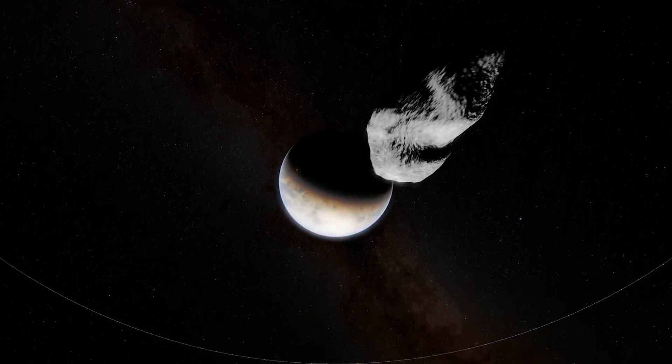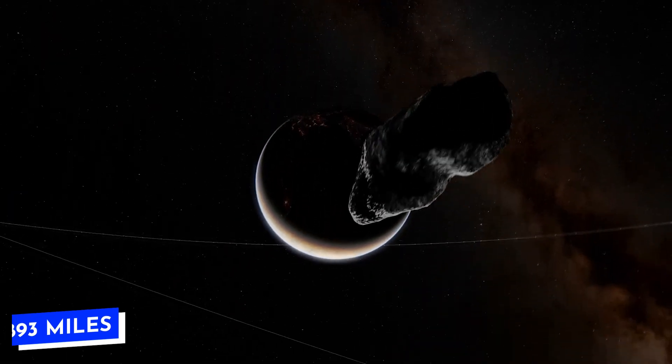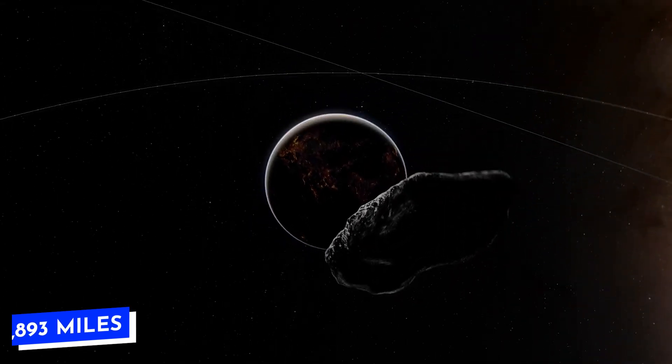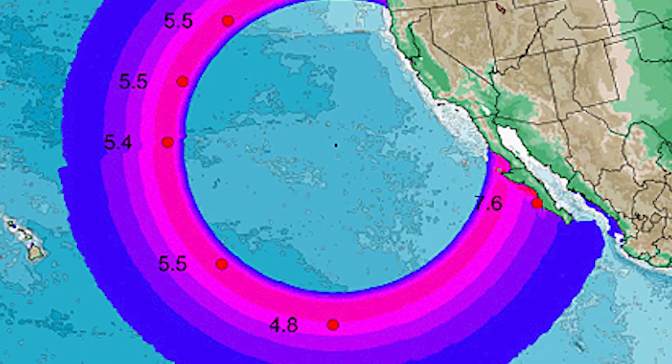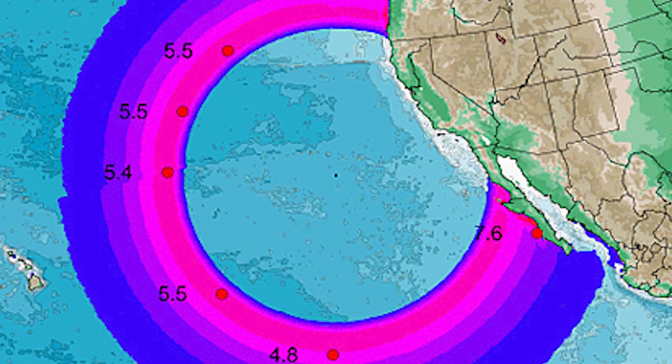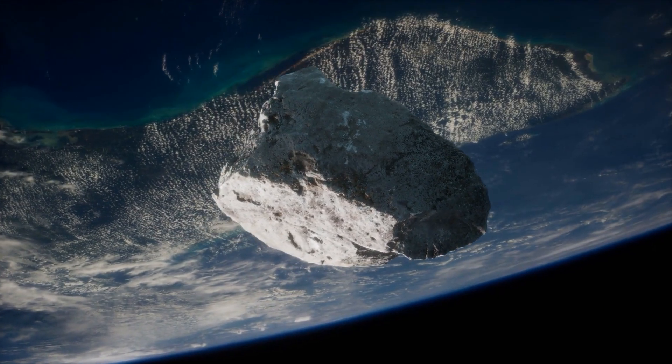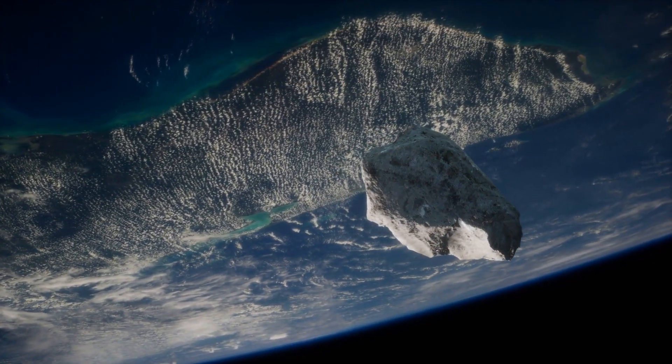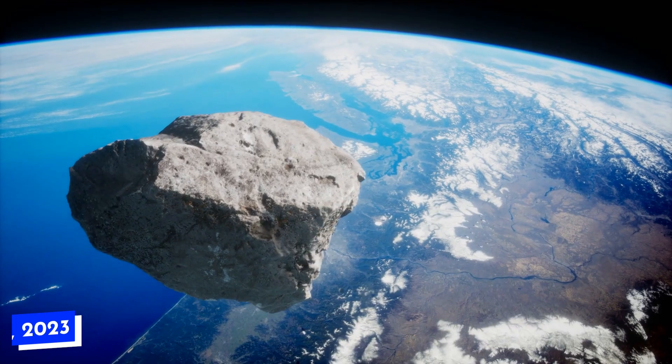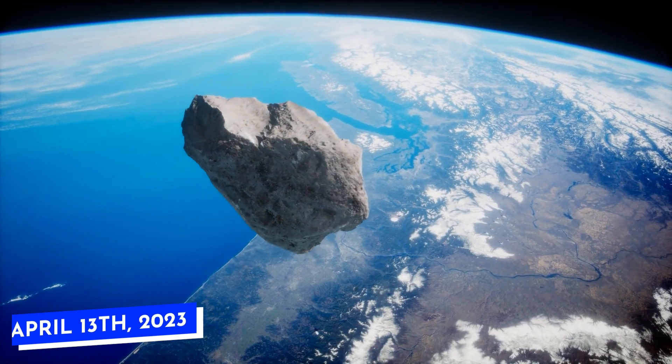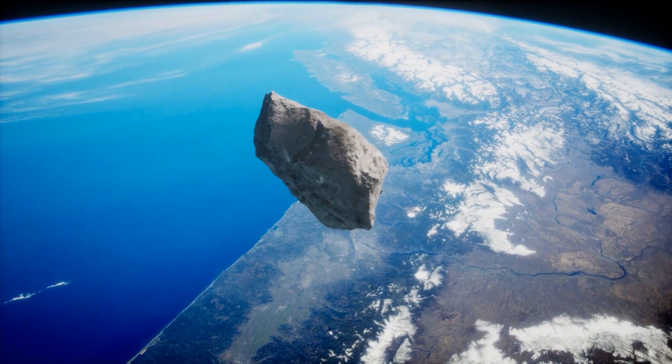However, if it passes Earth at an exact distance of 18,893 miles, it may pass through a gravitational keyhole, a small area with a 5-mile radius. If this happens, Apophis could be thrown off by Earth's gravity, which could change its path and make it hit Earth on Friday 13, April 2036, exactly 7 years later.